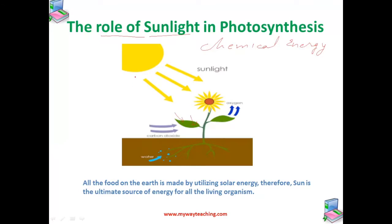Thus this solar energy is getting converted to chemical energy during photosynthesis. This chemical energy gets stored up in the form of plant food.